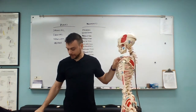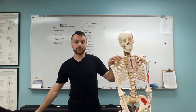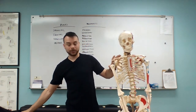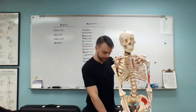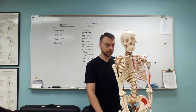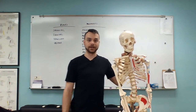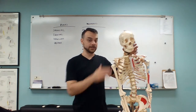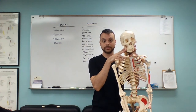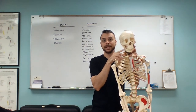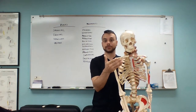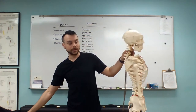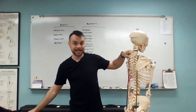Most of these movements recur at different areas of the body. For instance, the temporal mandibular joint can perform several of those actions. Now we're going to look at another movement called deviation.